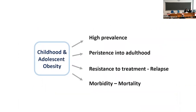Why does obesity have to be prevented and treated? There are at least four reasons. The first is prevalence. The second is the persistence of obesity from adolescence to adulthood — in 40% to 80% of cases, a child who is obese will become an obese adult. Then there is resistance to treatment; it is very difficult to treat obesity, especially severe obesity, and there is a high risk of relapse. The weight cycle syndrome is very common — people can lose weight but regain it very easily. And there is the important issue of morbidity and mortality.